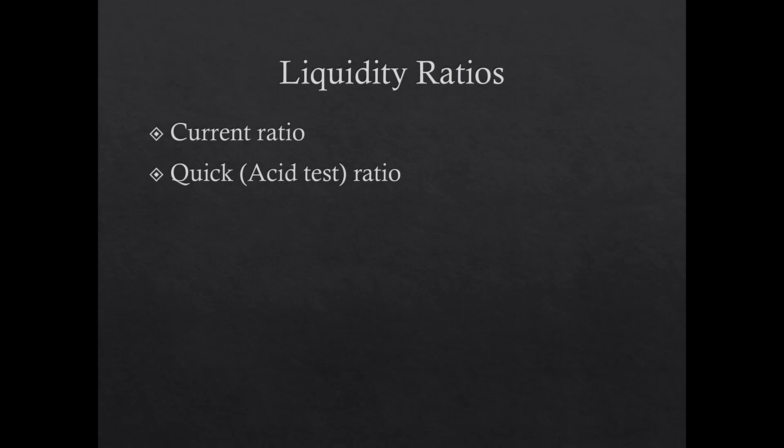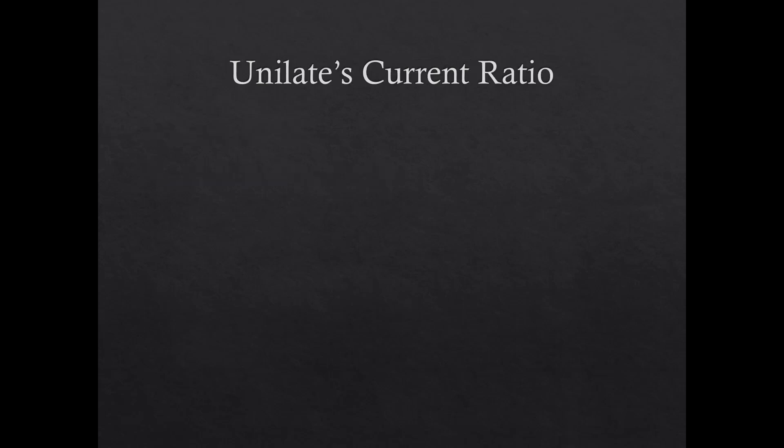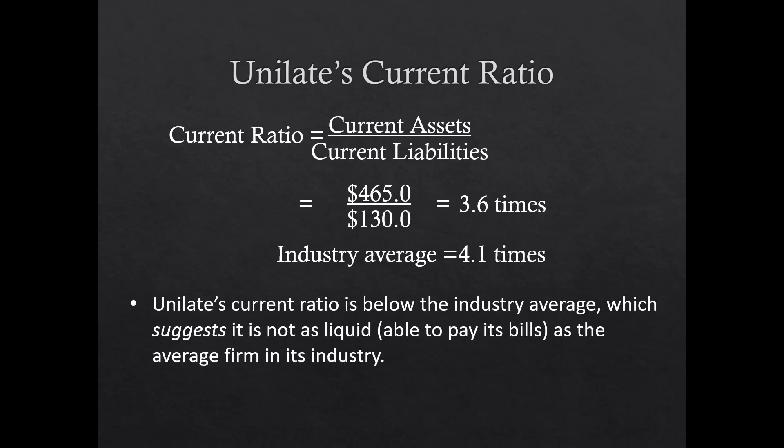For liquidity ratios, there are two predominant ones: the current ratio and the quick ratio. The current ratio is current assets divided by current liabilities. For Unilate at December 31, 2018: $465 million of current assets divided by $130 million of current liabilities equals 3.6. The industry average is 4.1, so Unilate's current ratio is below the industry average, which suggests it's not as liquid as the average firm in the industry.